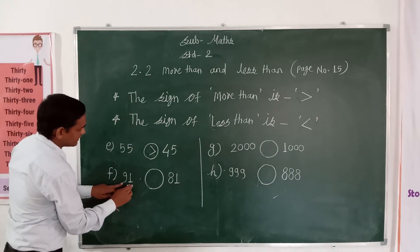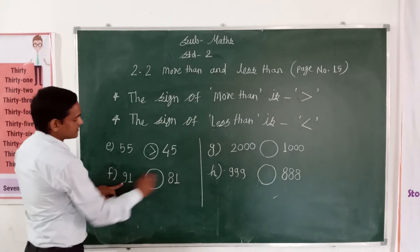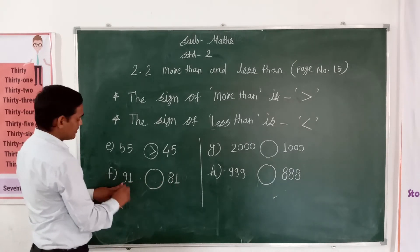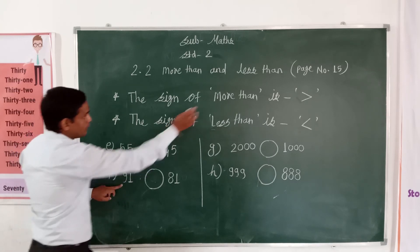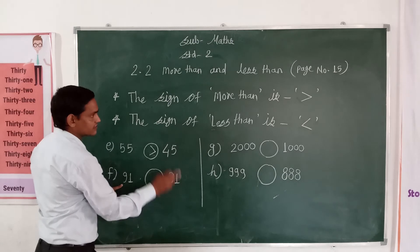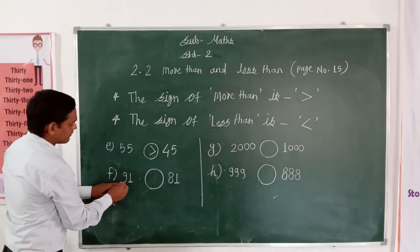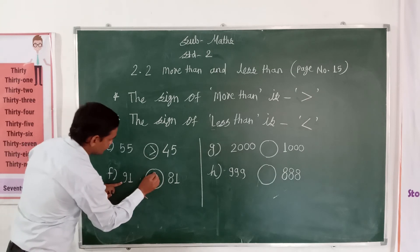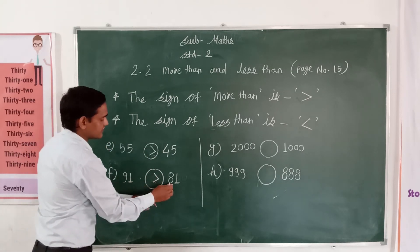Next: 91 and 81. Which number is less and which is more? The first number, 91, is the greater number, and 81 is the smaller number, means less. So write down here: 91 is more than 81.